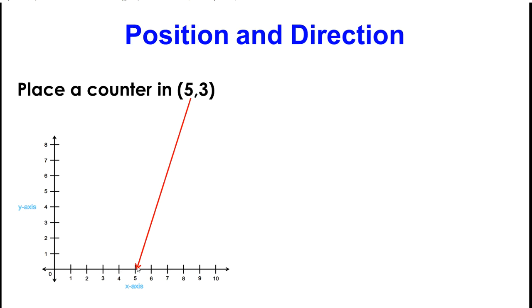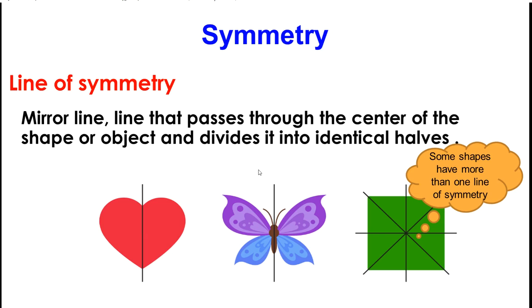And now, I'm going to move up 3 on my y-axis. 1, 2, 3. And I will place my counter. Here is my placed counter. And I found my place for 5 and 3. The ordered pair for 5 and 3.